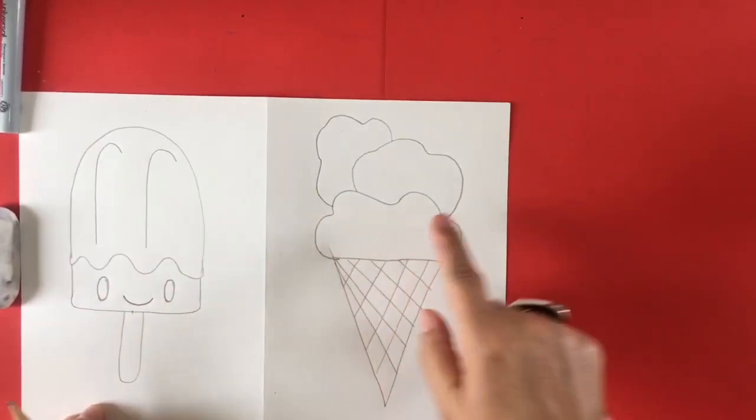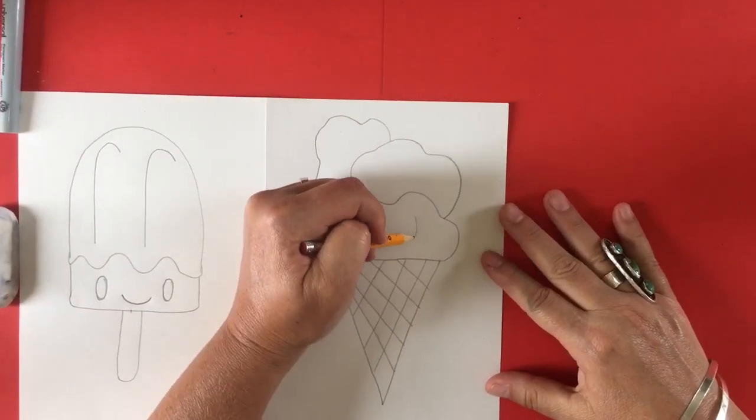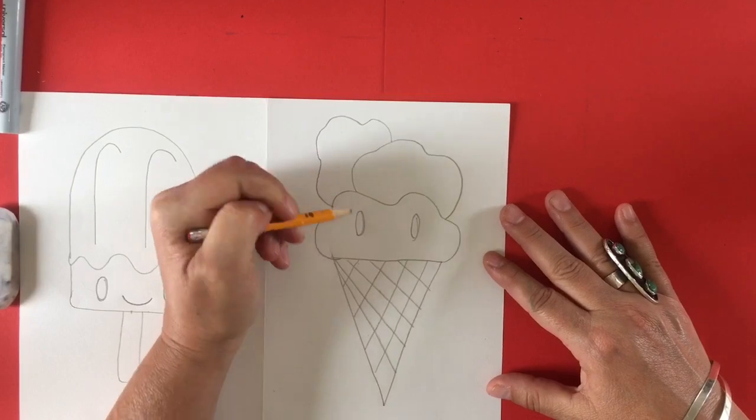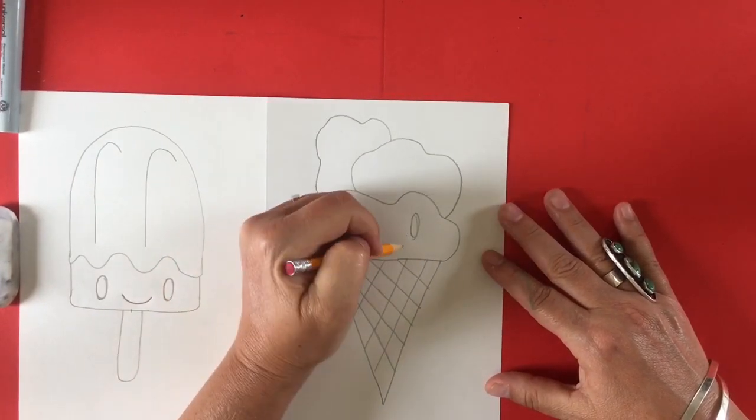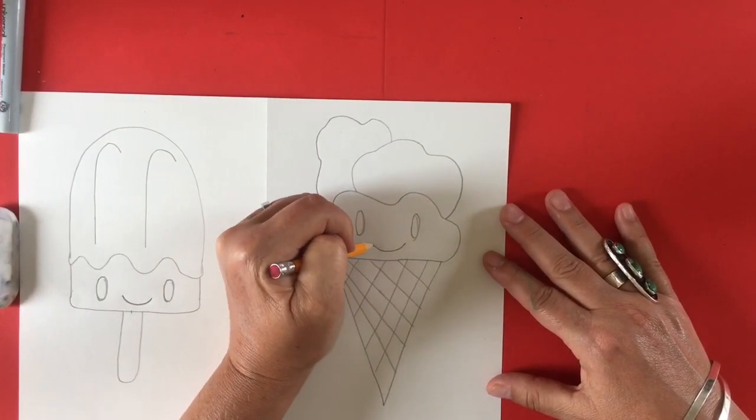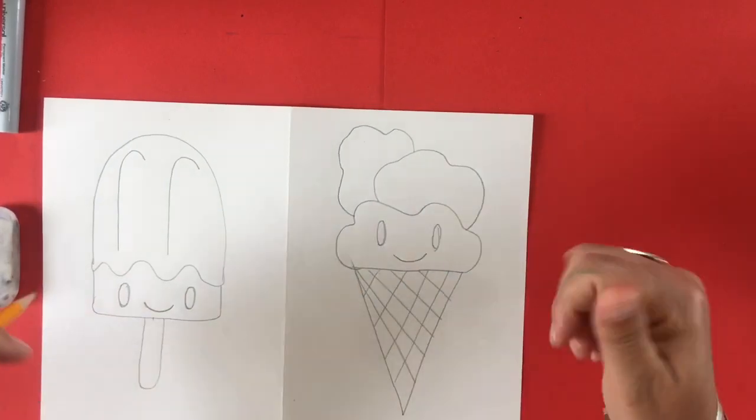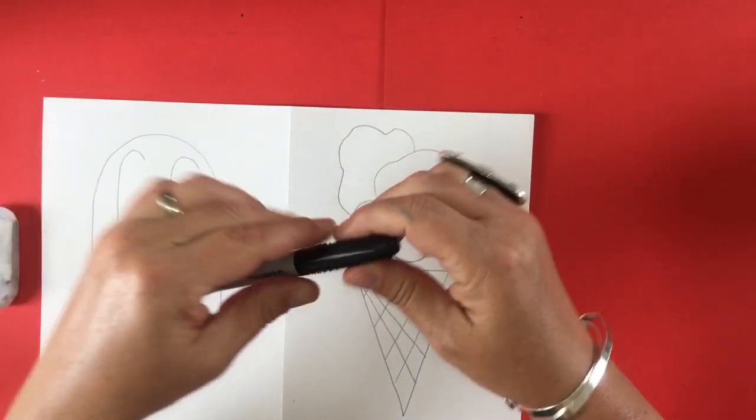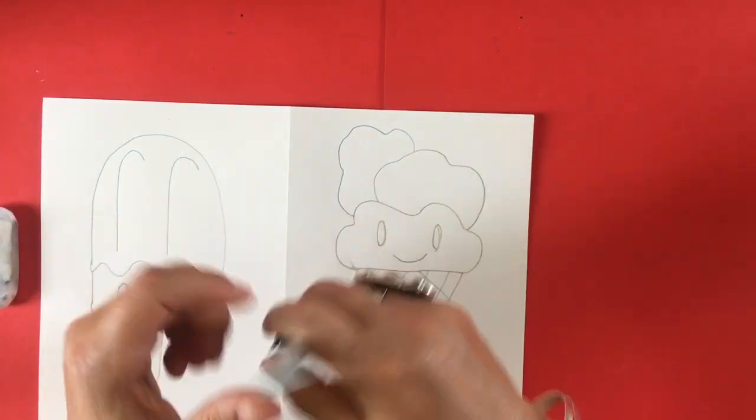Now we need to give our ice cream cone a friendly face. I'm making two symmetrical ovals and another smile face right in the middle. And now I'm all done. You can make whatever face you want on yours of course using your creative side.